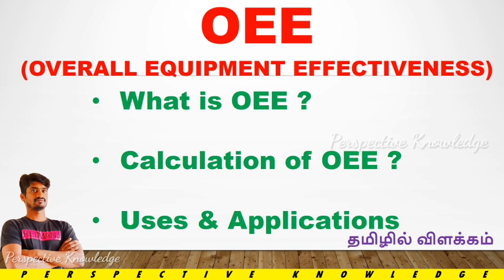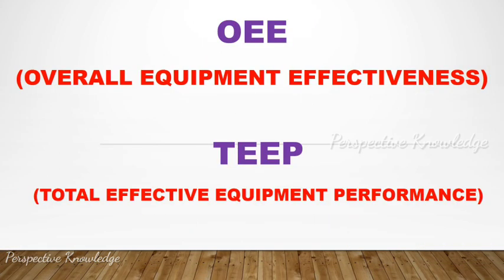We are going to do a lot of training. OEE is the main thing in all manufacturing industries. OEE — Overall Equipment Effectiveness — is the main thing.